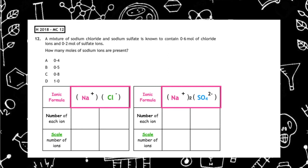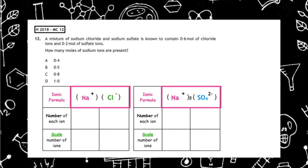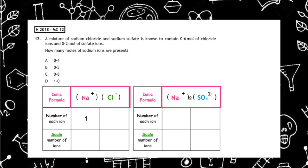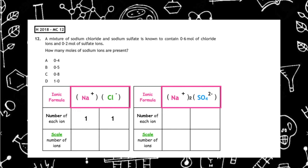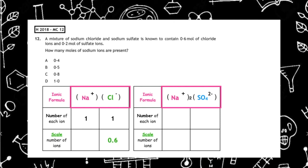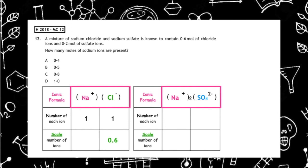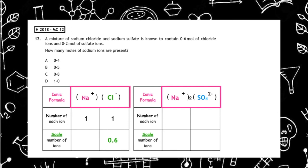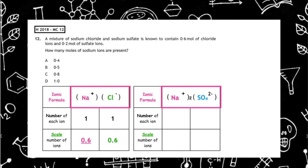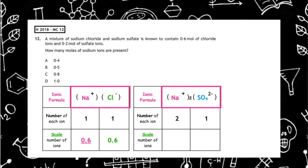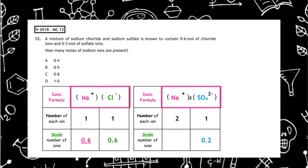Starting with sodium chloride, the ratio of each ion is 1 to 1. We've been given 0.6 moles of chloride ions, so we place that under the chloride ion and cross-multiply: 1 times 0.6 divided by 1 gives us 0.6 moles of sodium ions in sodium chloride. For sodium sulfate, the ratio is 2 to 1. We have 0.2 moles of sulfate ions, so we place that under the sulfate ion and cross-multiply.